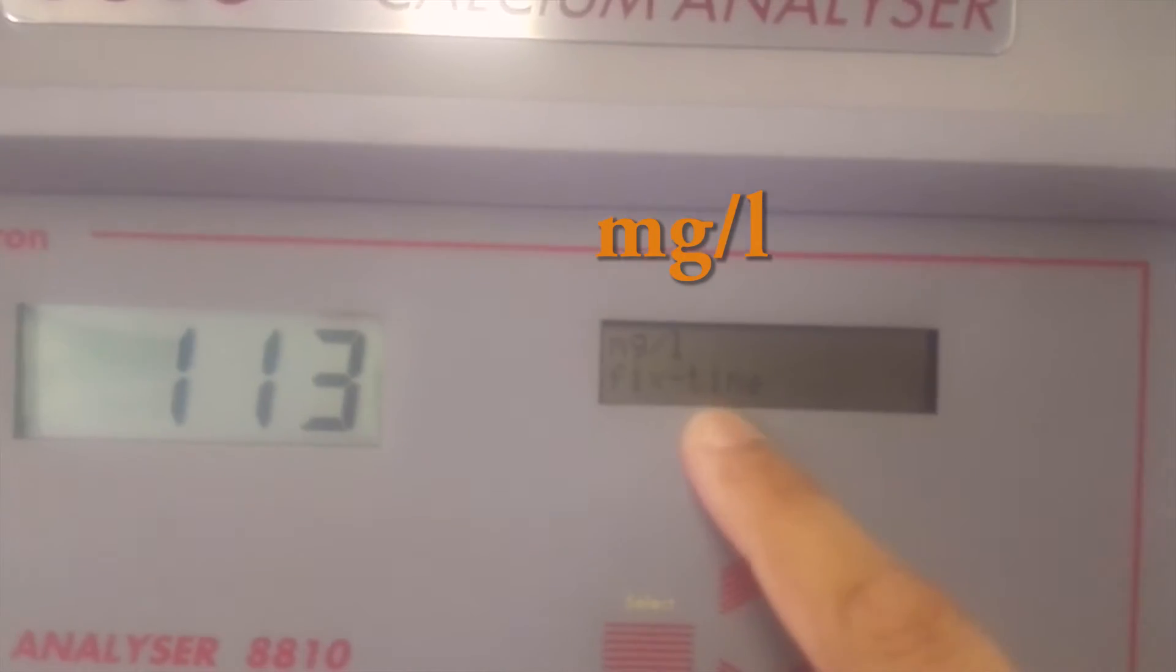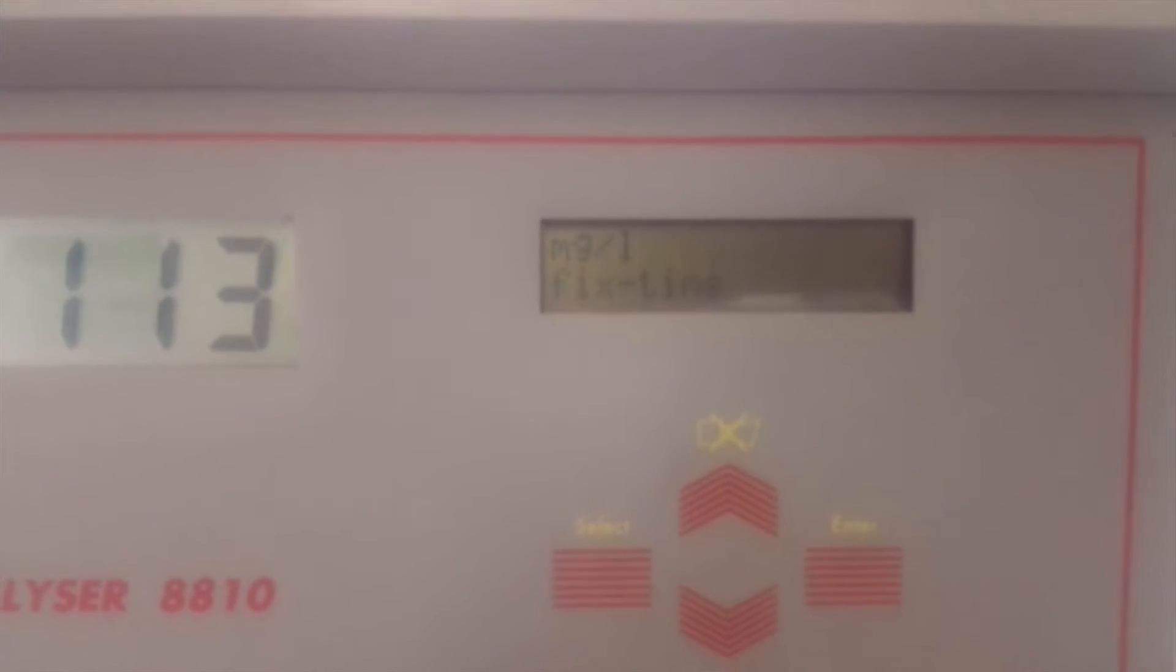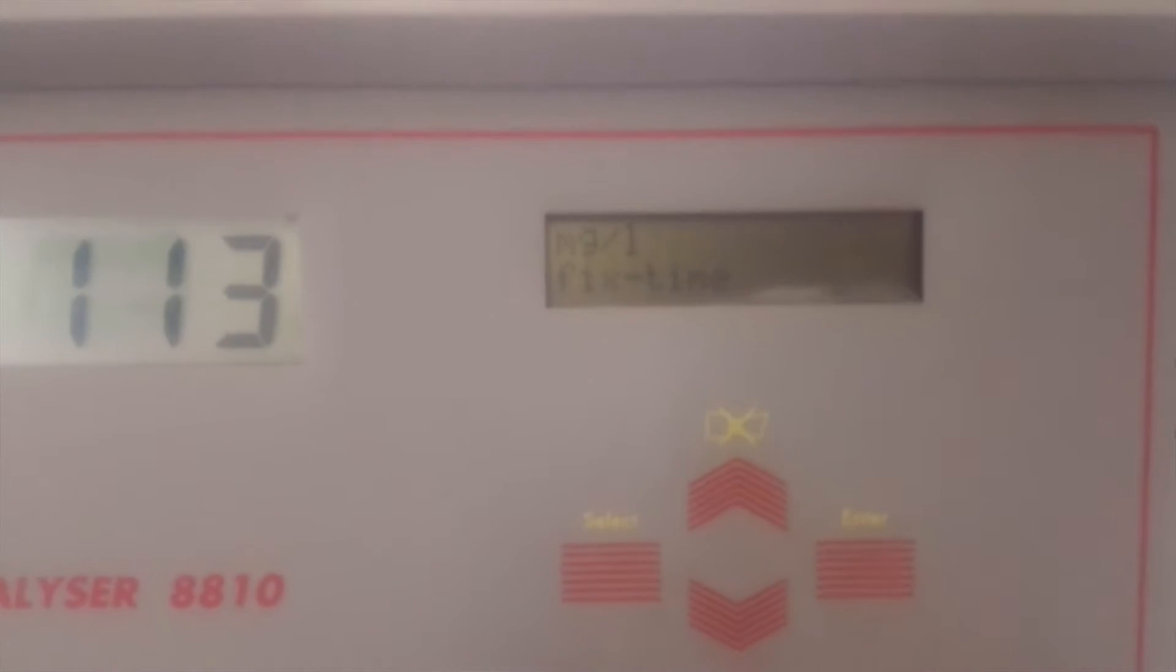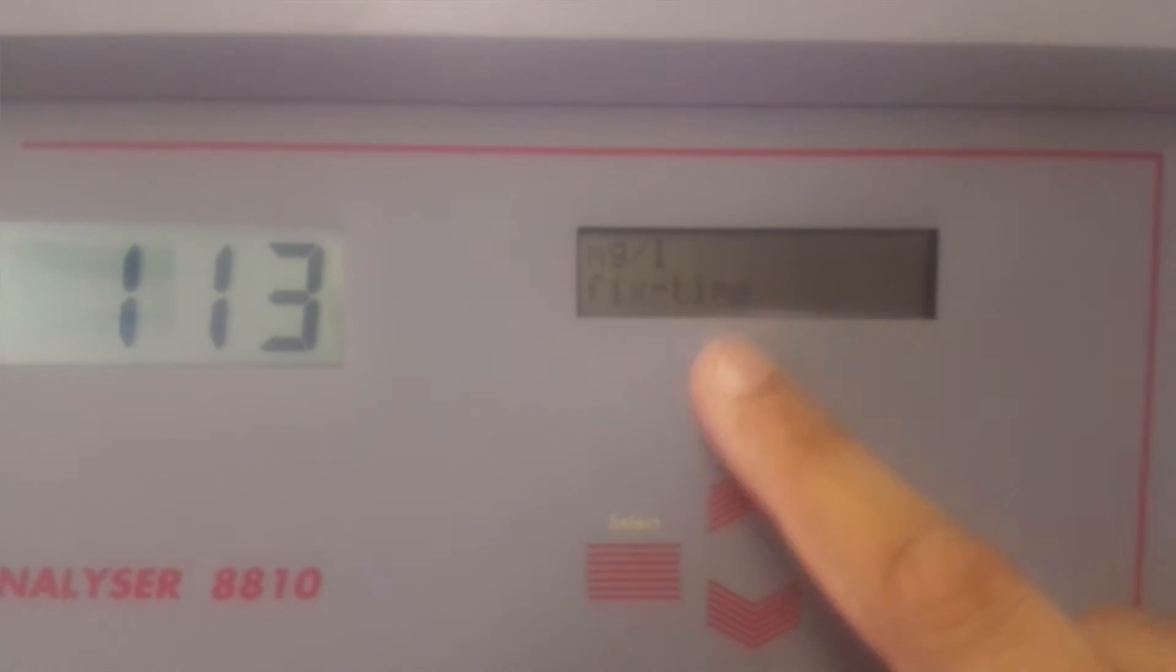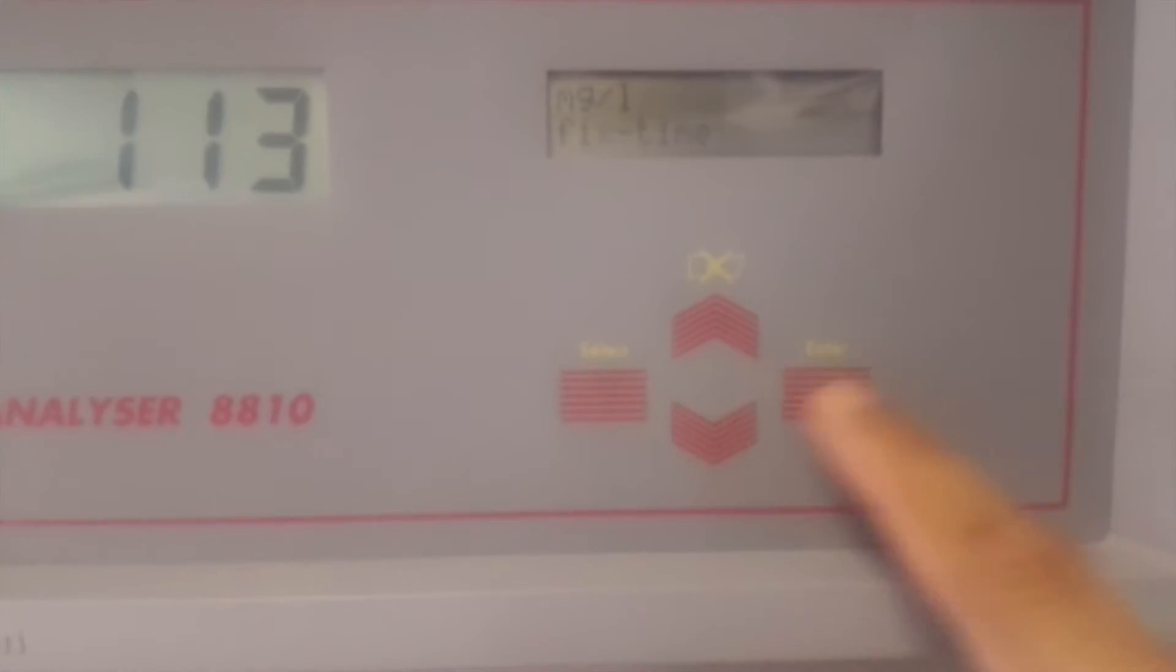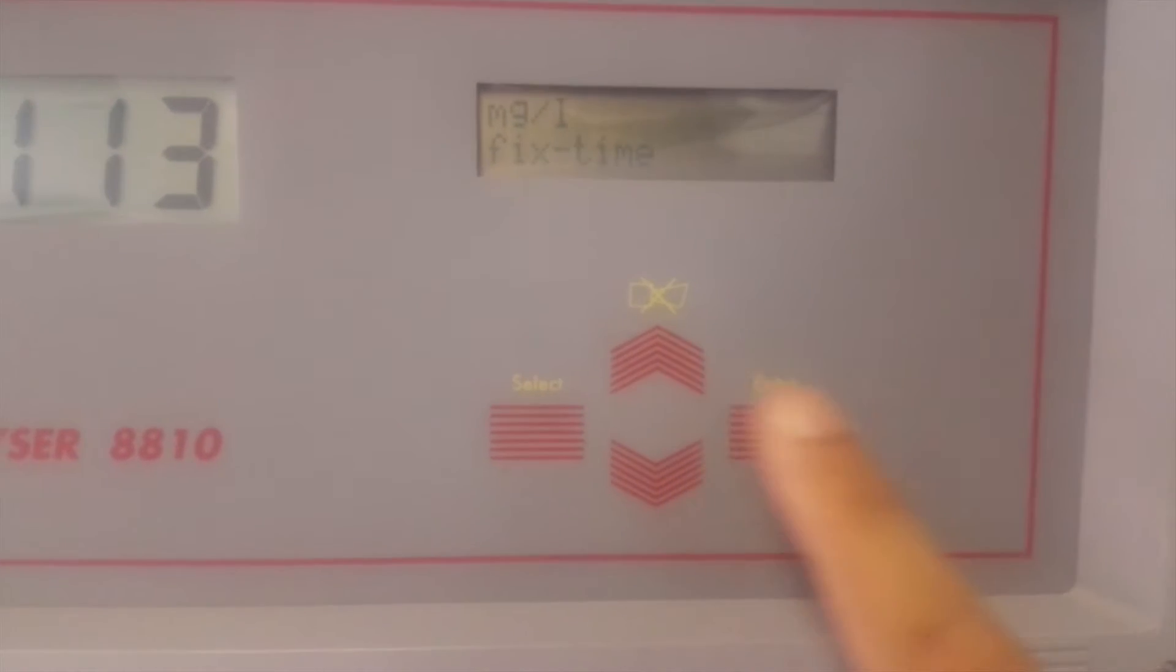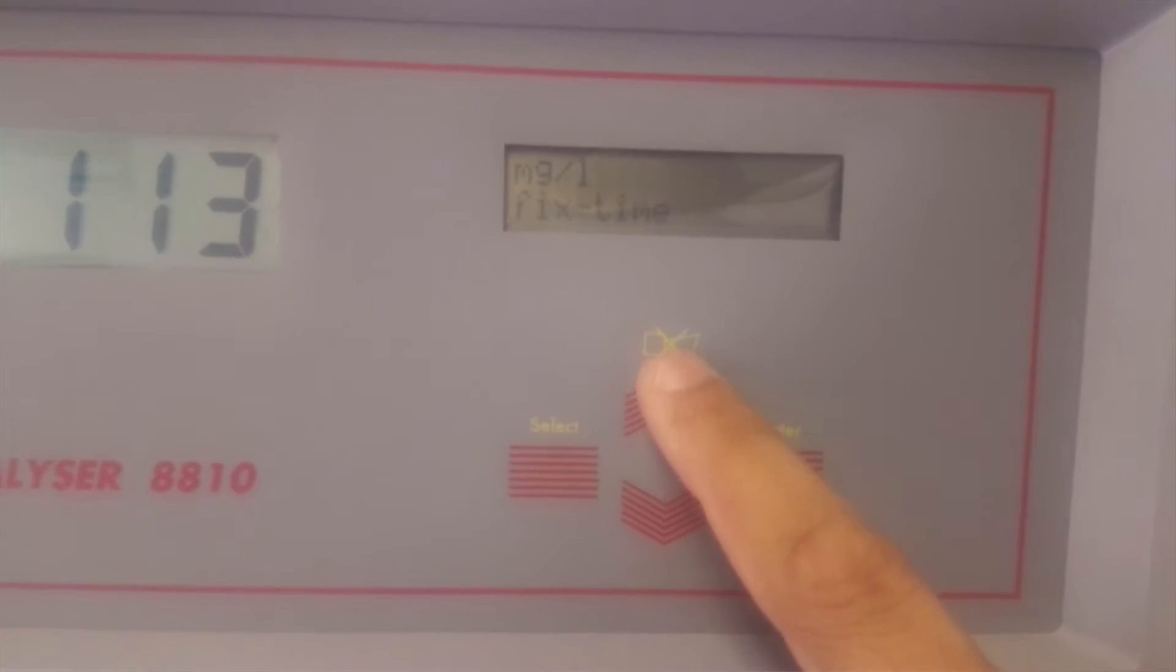Which is milligram, and the status of the analyzer or sequence mode. Now it is showing fixed time, which means it will give you titration results after a decided period of time. We set this time to 15 minutes. The display menu can be changed with these key buttons: select key, enter key, alarm acknowledge key, up key, and down key. You can use up and down keys to scroll through the menu.